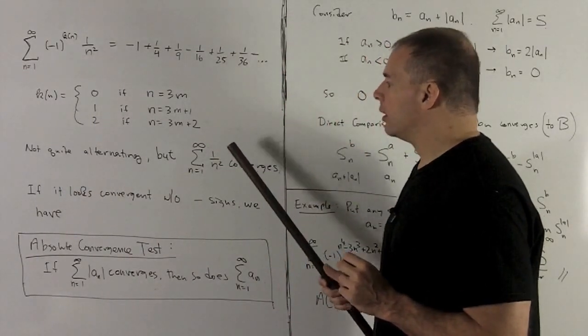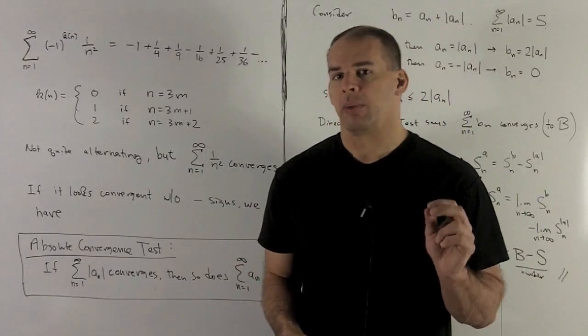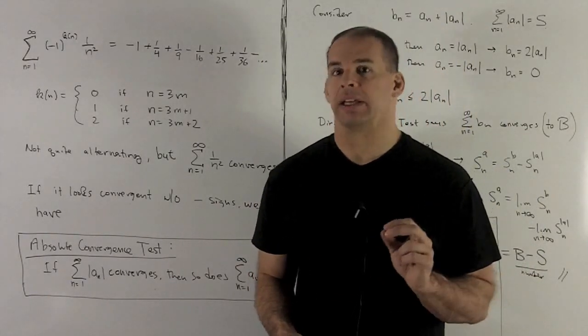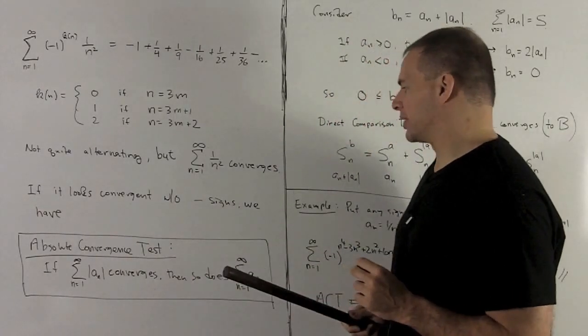But like I noted, the 1 over n squared converges. So can we work with this? Definitely. So this is going to lead us to our next test for series, absolute convergent test.